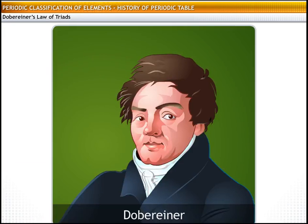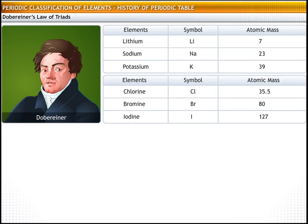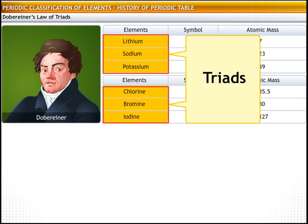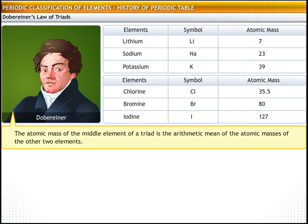After further research, a German scientist, Döbereiner, arrived at a hypothesis in the year 1829. According to Döbereiner, all elements occurred in groups of three when arranged in increasing order of atomic masses. He referred to these groups as triads. Döbereiner's Law of Triads states that the atomic mass of the middle element of a triad is the arithmetic mean of the atomic masses of the other two elements.